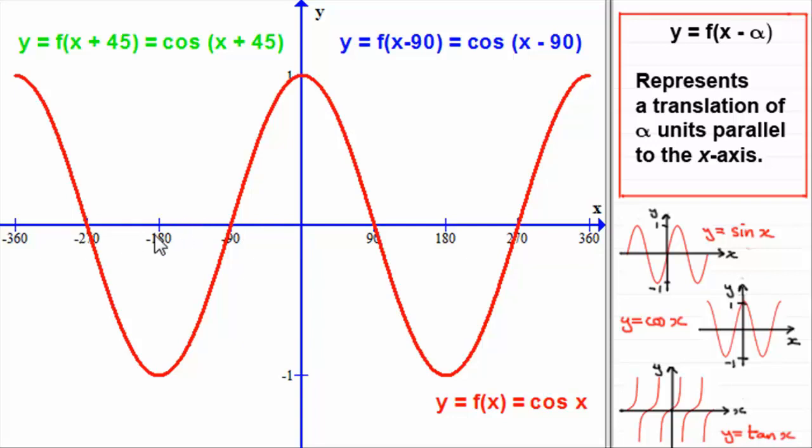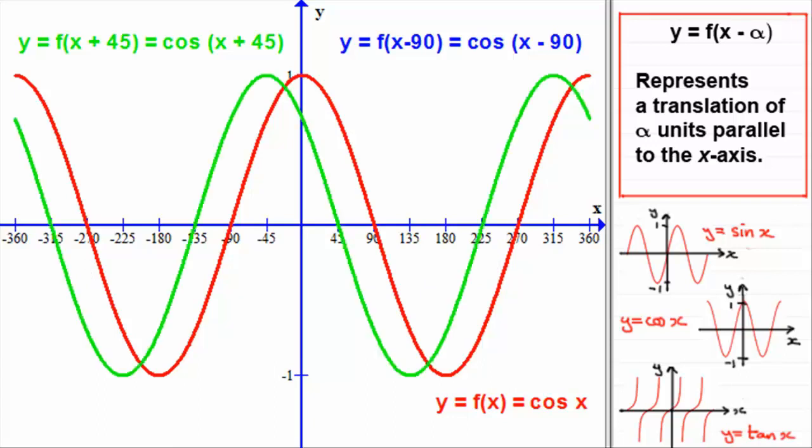If we mark in the 45 degrees and sketch the graph, what you're going to have is this. The red graph of cos x has now been shifted 45 degrees to the left. All our points on the x-axis shift 45 degrees to the left, so do the peaks, so do the troughs. So we have a translation there.